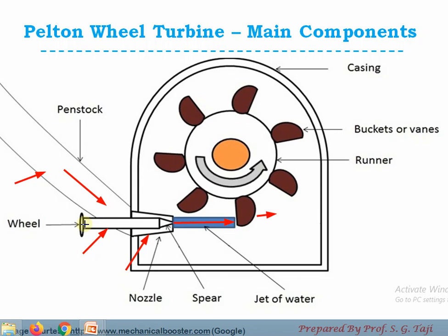The next component is the spear, also called the needle. Its function is to control the flow coming out from the nozzle — that is, controlling the discharge. If I move this needle in the forward direction, the area of the opening gets reduced and discharge coming out from the nozzle also gets reduced. If I move it in the backward direction, the flow area gets restored and discharge coming out from the nozzle also gets restored.